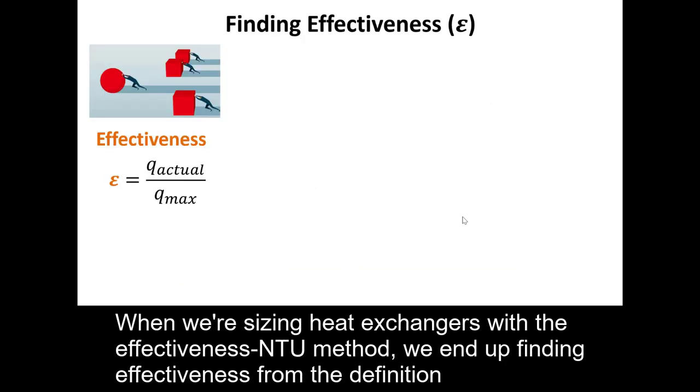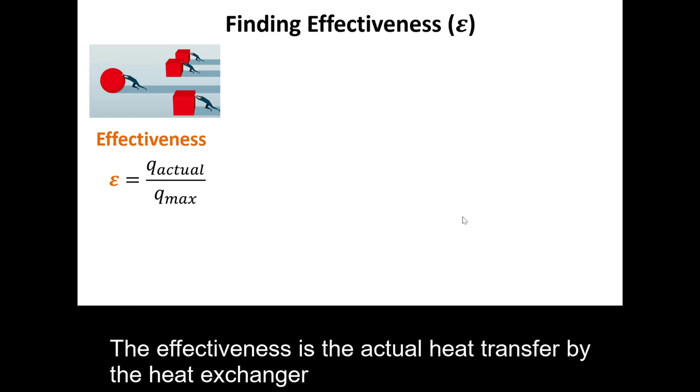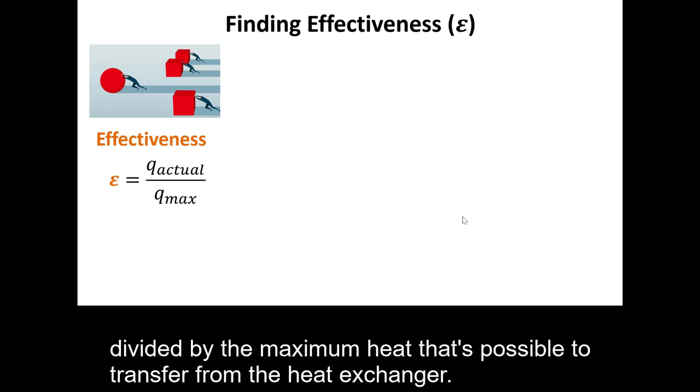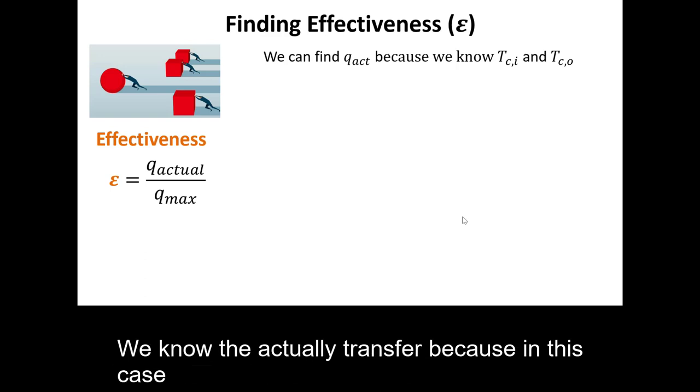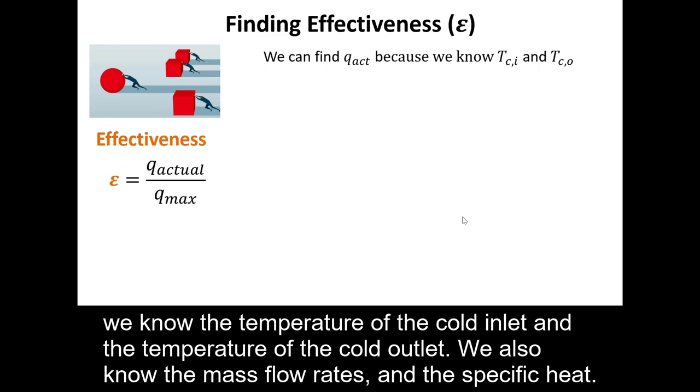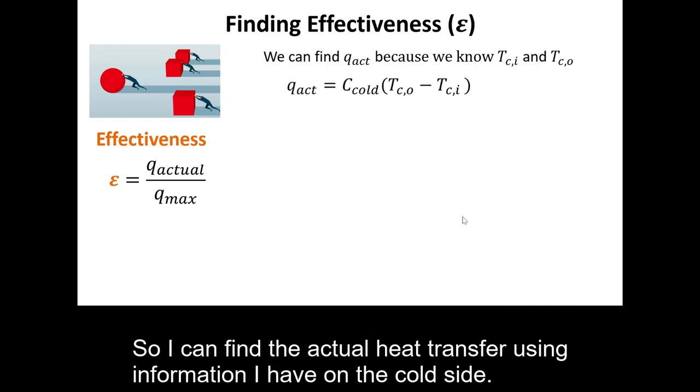When we're sizing heat exchangers with the effectiveness NTU method, we end up finding effectiveness from the definition. The effectiveness is the actual heat transferred by the heat exchanger divided by the maximum heat that's possible to transfer from the heat exchanger. We know the actual heat transfer because in this case, we know the temperature of the cold inlet and the temperature of the cold outlet. We also know the mass flow rates and the specific heat. So I can find the actual heat transfer using information I have on the cold side.